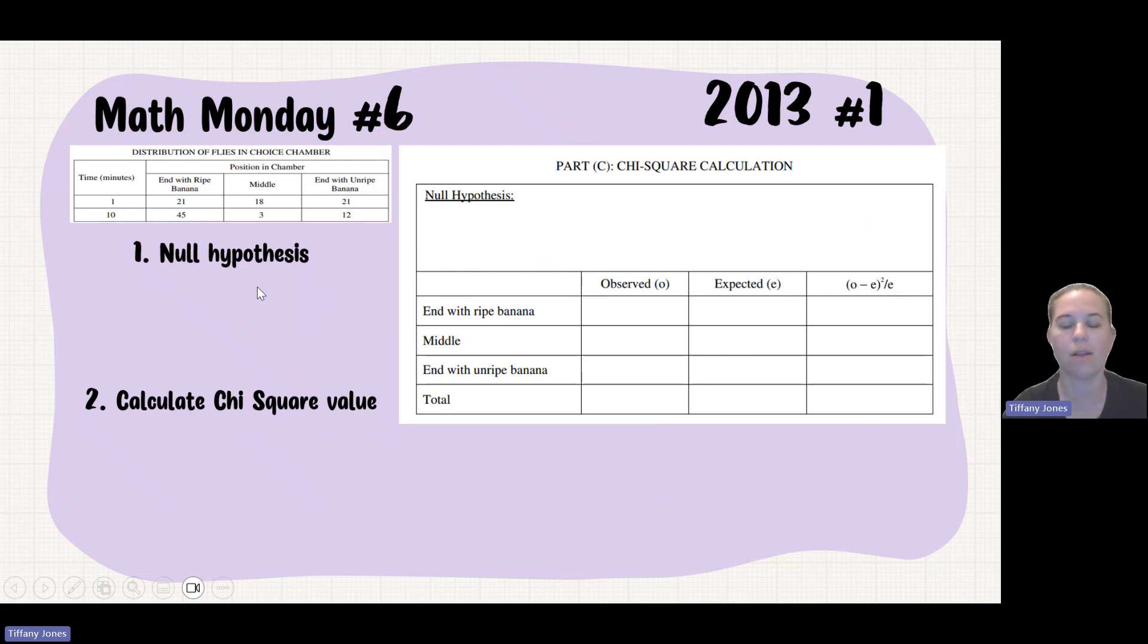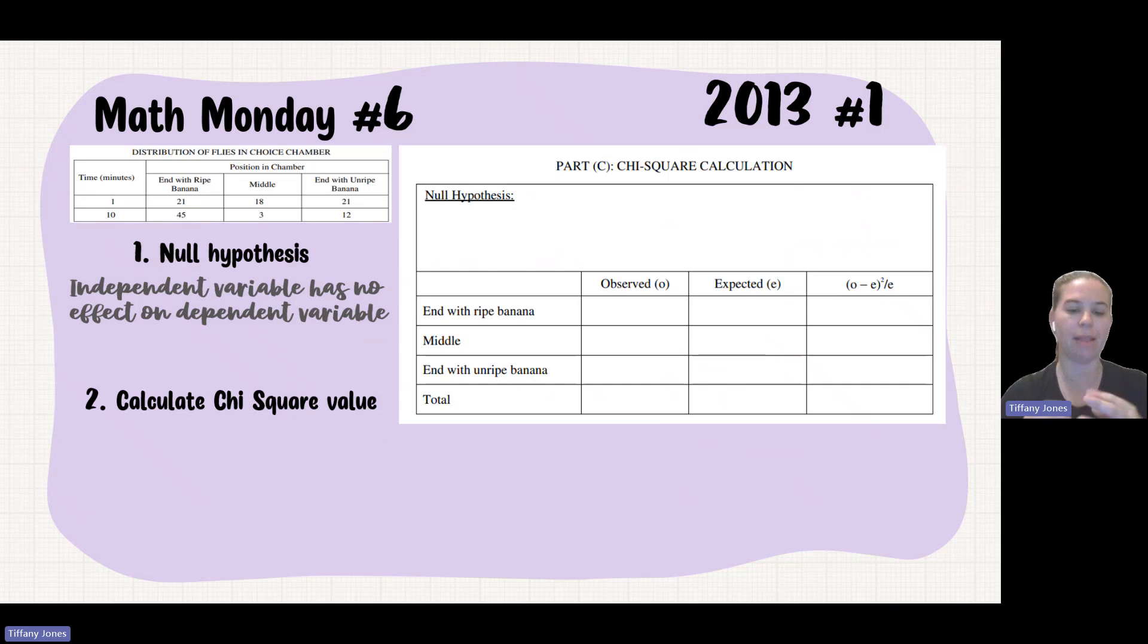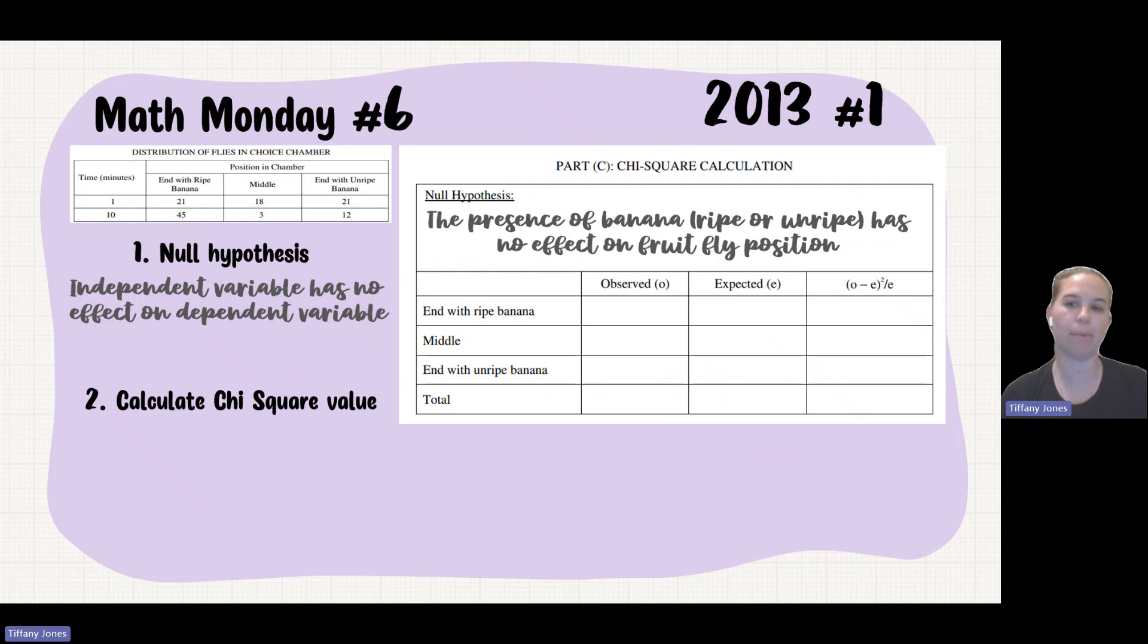First thing, what is our null hypothesis? Our null hypothesis is always going to be the independent variable has no effect on the dependent variable. In terms of this, we're looking at our experiment being that the ripe versus unripe banana has no effect. So we should see an equal distribution of the flies in the end with the ripe banana, the middle, and the end with the unripe banana. Presence of banana ripe or unripe has no effect on the fruit fly position.